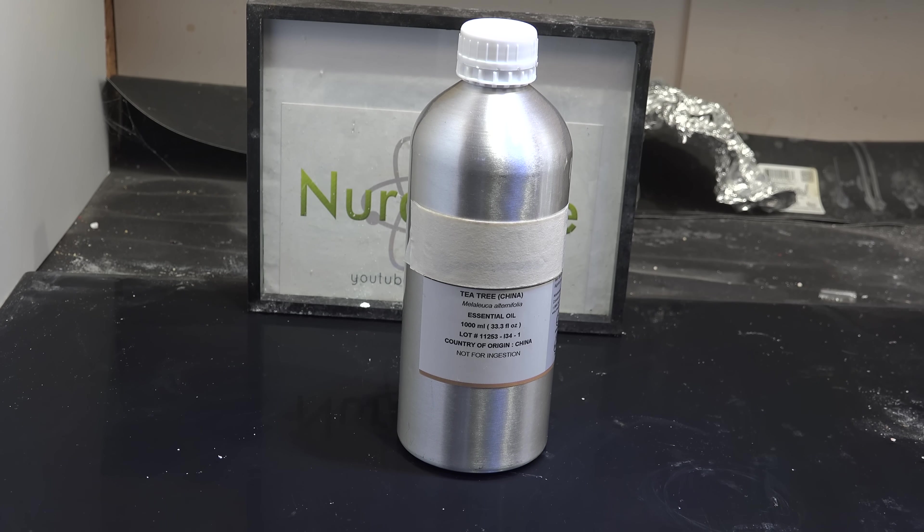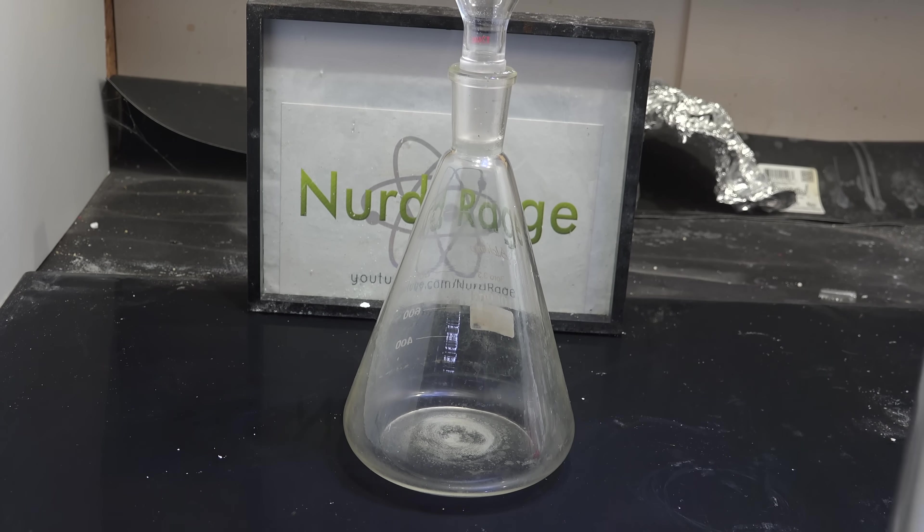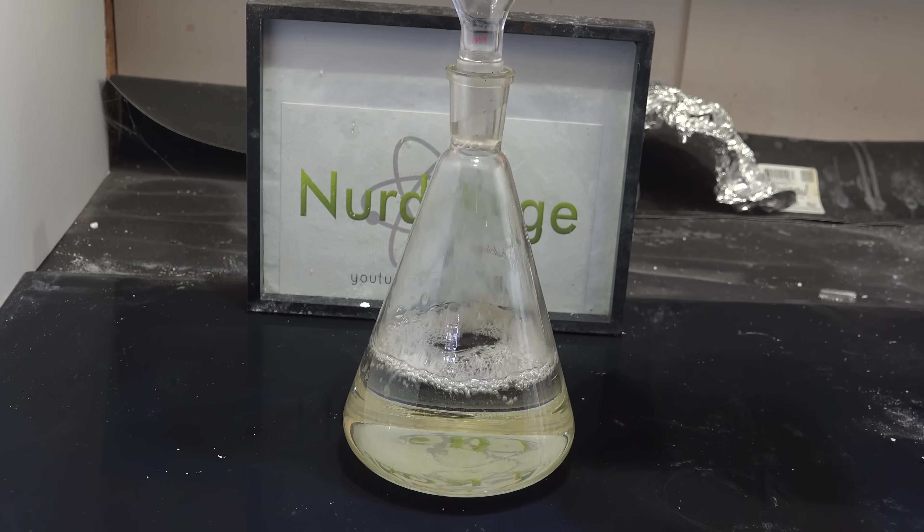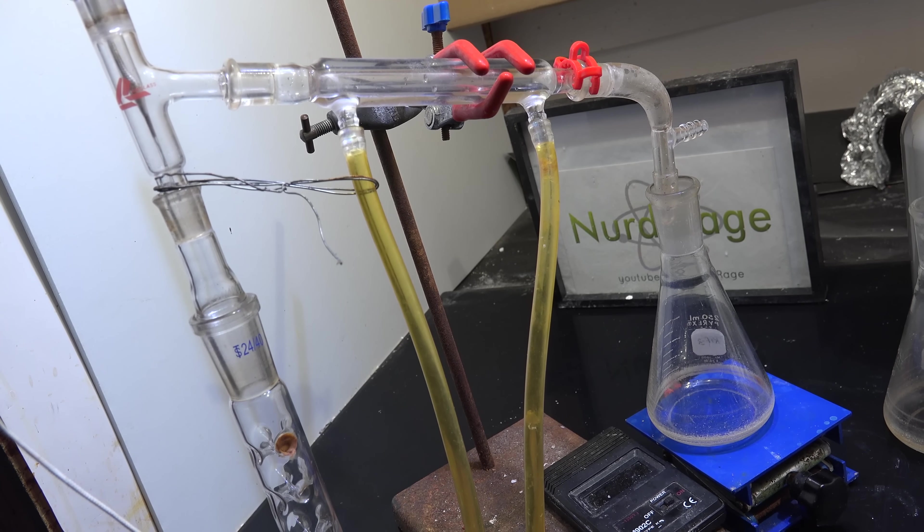Since it's easier for the amateur to fractionally distill than it is to hydrogenate alkene groups, we'll do that first. So I took my tea tree oil and poured it into a large flask and then set up a full size 100cm fractional distillation column.